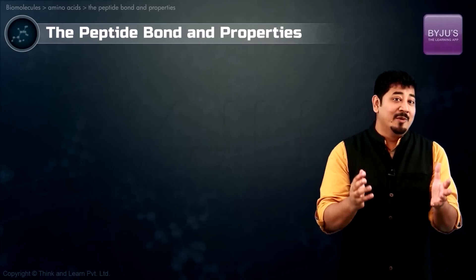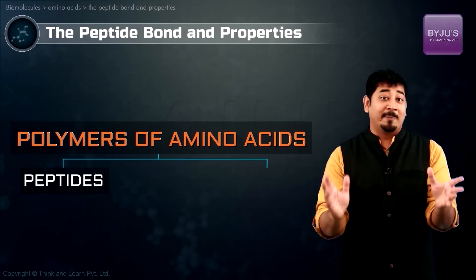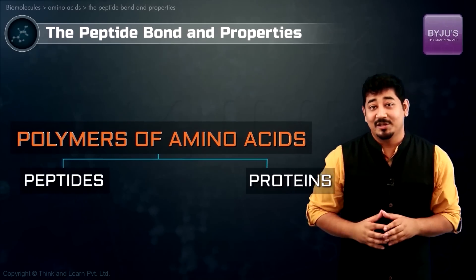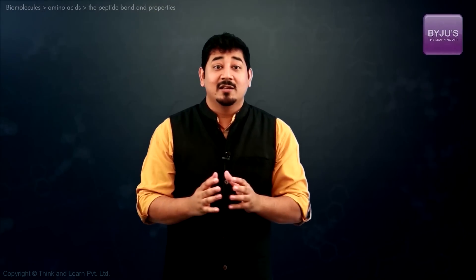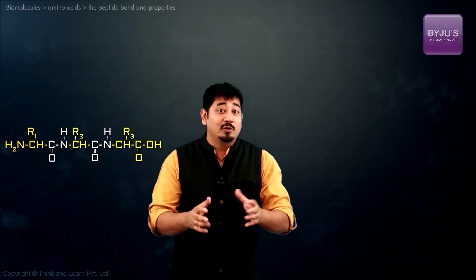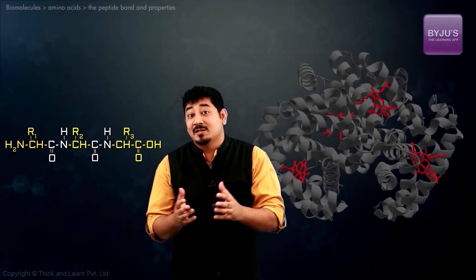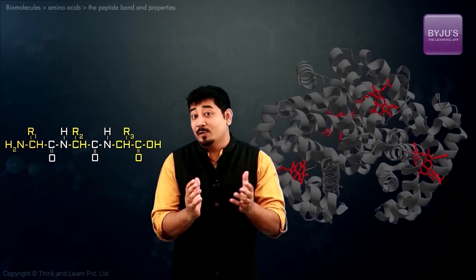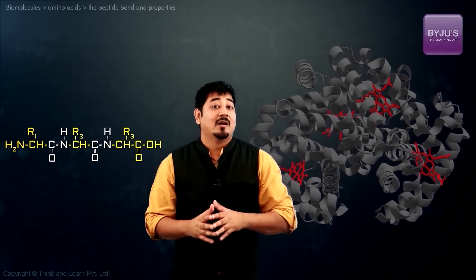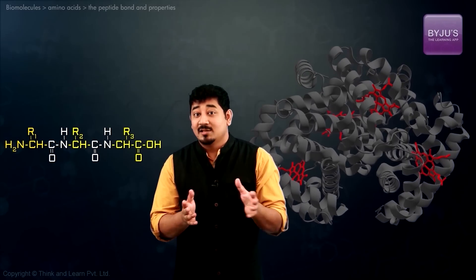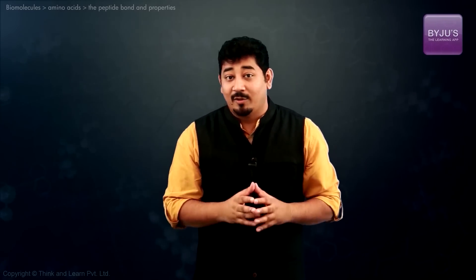We now turn to polymers of amino acids, i.e. peptides and proteins. Biologically occurring polypeptides range in size from small to very large, consisting of two or three amino acids to thousands of linked amino acid residues. Our focus is on the fundamental chemical properties of these polymers.